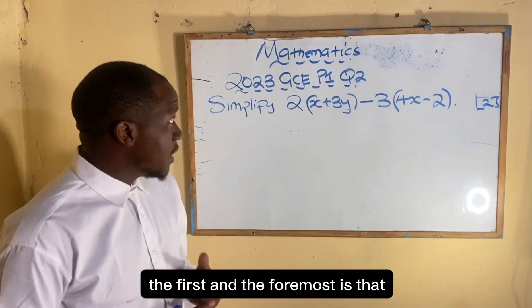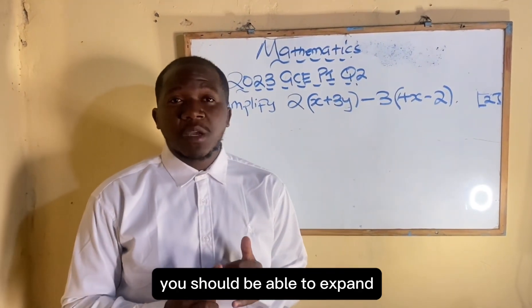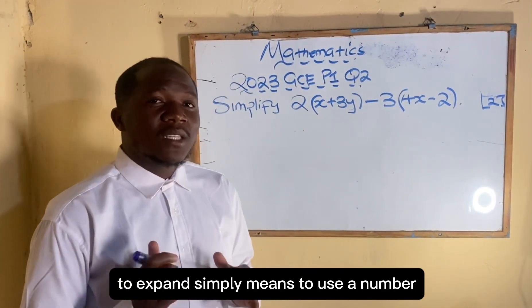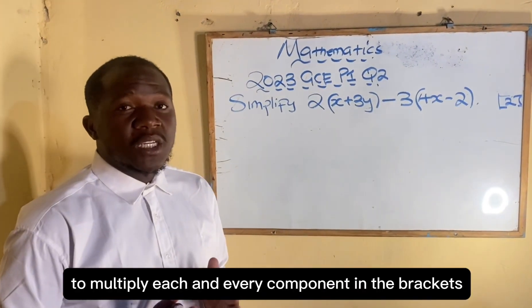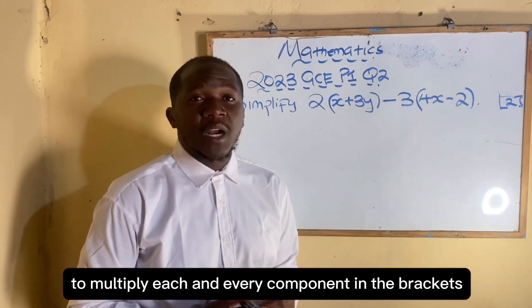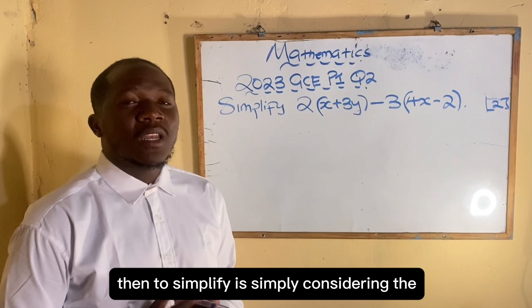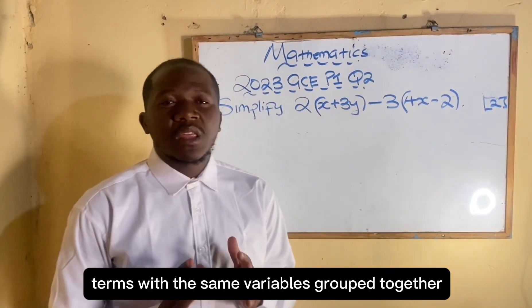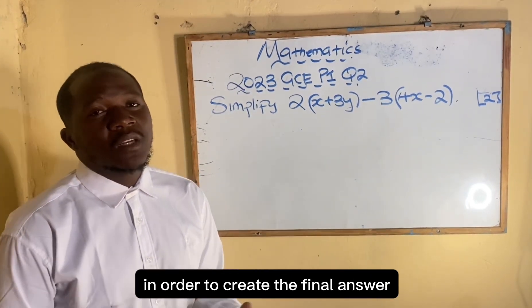The first and foremost is that when you have the brackets you should be able to expand. To expand simply means to use a number outside the brackets to multiply each and every component in the brackets. Then to simplify is simply considering the terms with the same variables grouped together either added or subtracted in order to create the final answer.